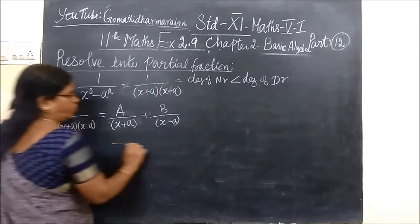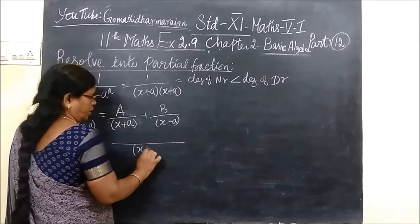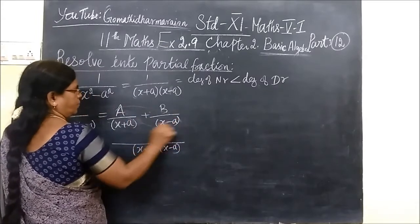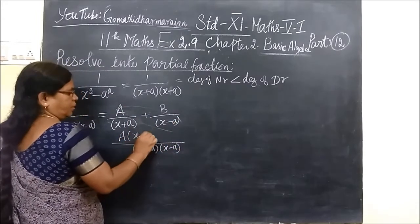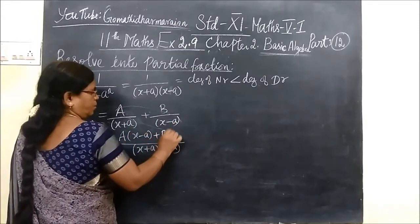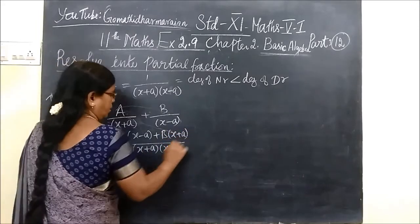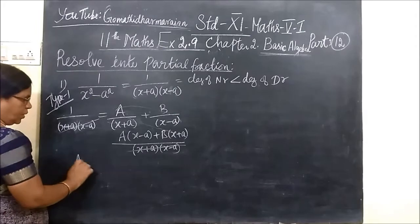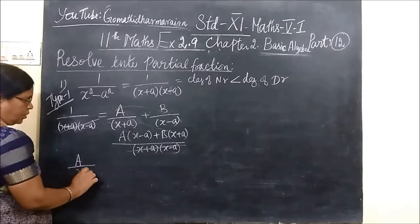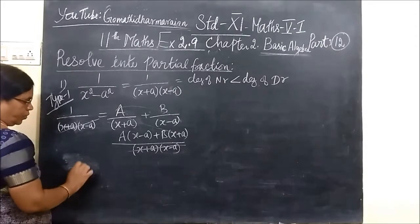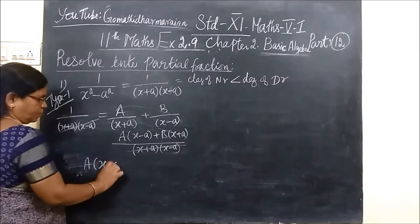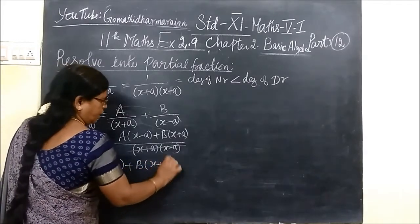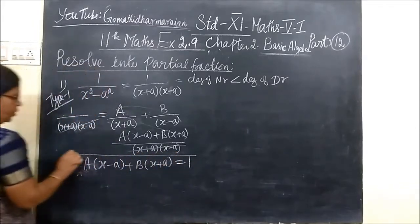Now you take LCM. So S plus A, S minus A cross multiplied. So A bracket S minus A, plus B bracket S plus A. So the denominator is cancelled. The remaining: A bracket S minus A, S plus A equals 1.